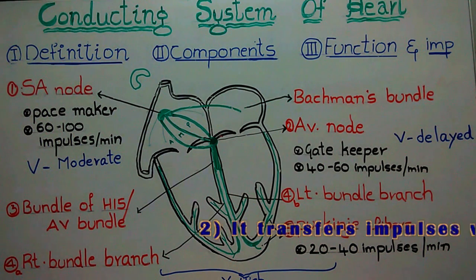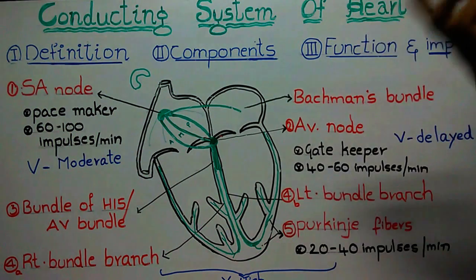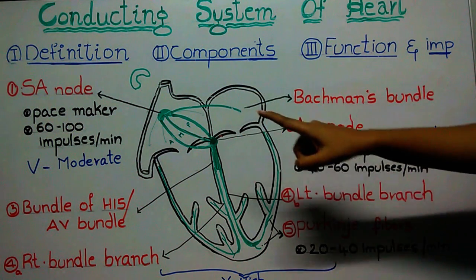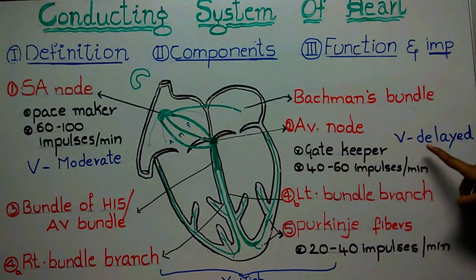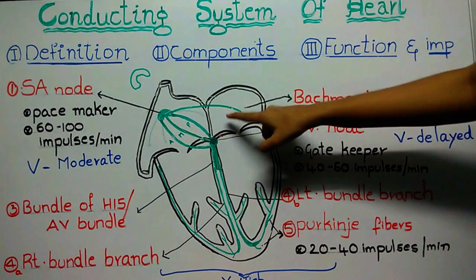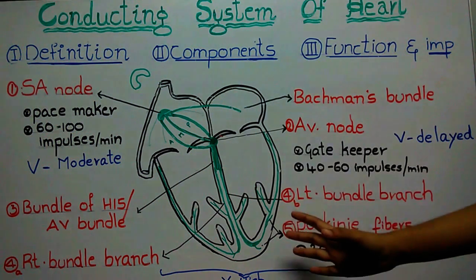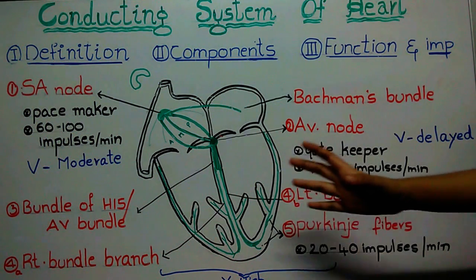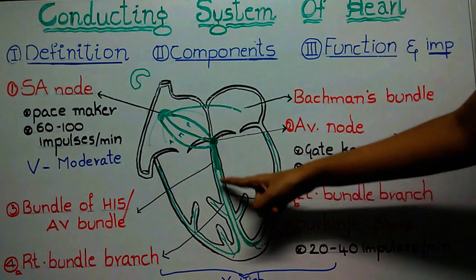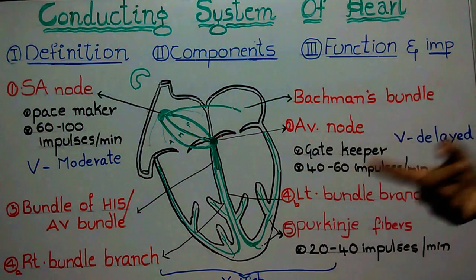The second important thing about the AV node is that it conducts or transfers impulses very slowly — it does not conduct impulses as soon as it receives them from the atrium. It delays the conduction. However, this delay is very helpful because of this delay, the atria contract first and empty their blood, then the conduction slowly passes to the ventricles, and the ventricles contract later.